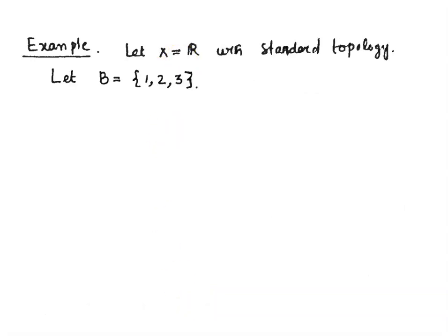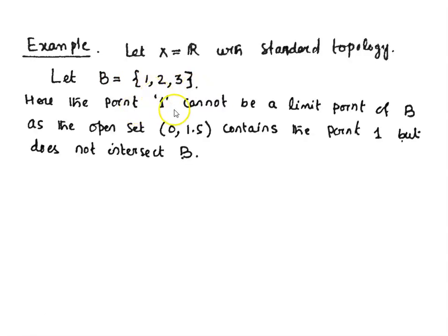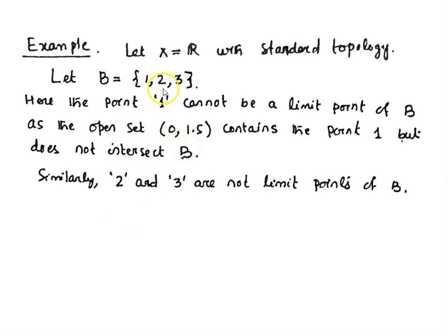Let us consider R with standard topology again and consider a set B = {1, 2, 3}. The point 1 cannot be a limit point of B, as if we take the open interval (0, 1.5), this open set contains 1 but does not intersect B at any point other than 1. So point 1 cannot be a limit point of B. Similarly, points 2 and 3 are not limit points of this set B.